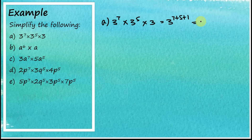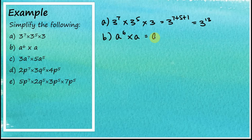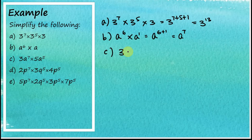So 3 to the power of 7 plus 5 plus 1 equals 3 to the power of 13. For (b): a to the power of 6 times a equals a to the power of 6 plus 1, which equals a to the power of 7.